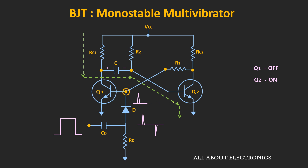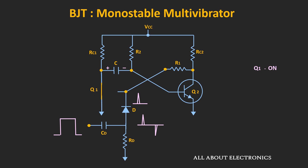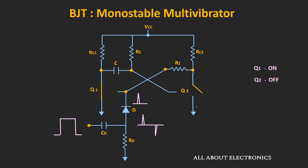As soon as the trigger pulse is applied to the base of Q1, it goes into saturation and acts as a short circuit. At that point, the left-hand side of the capacitor gets grounded, and the voltage of minus (Vcc minus Vbe) gets applied directly to the base of transistor Q2. Due to this large negative voltage, Q2 goes into the cutoff region and acts as an open circuit.